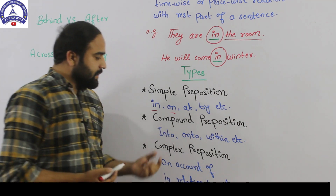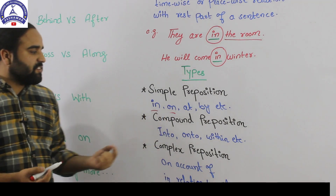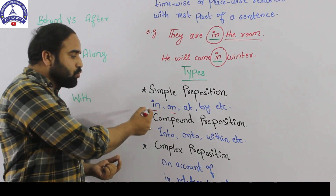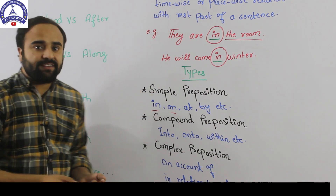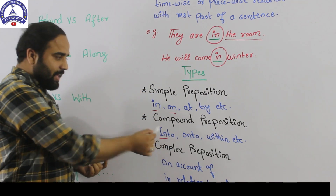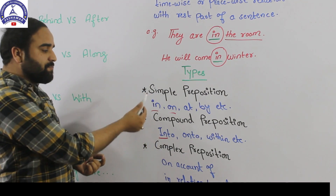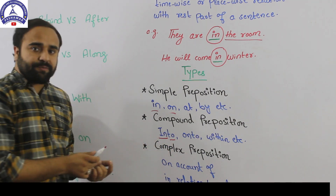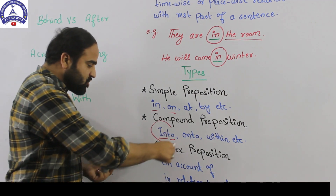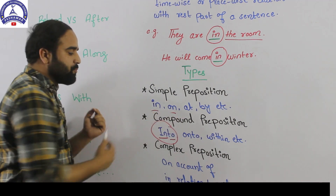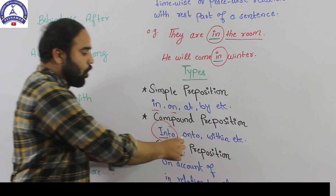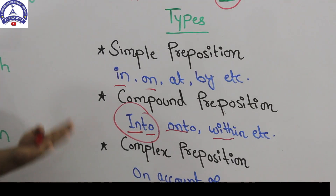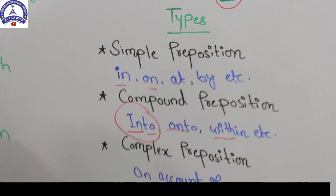Compound preposition is made of two simple prepositions. For example, 'in' is a simple preposition and 'to' is a simple preposition. When they combine together, they make a compound preposition — like 'into', 'onto', 'within', 'upon'. All these are compound prepositions.